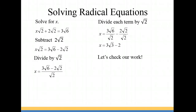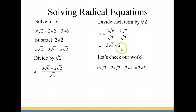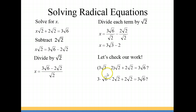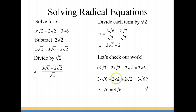Now we're going to check our work. Where we have x in our original equation we're going to replace it with (3√3 minus 2). I put that in parentheses because it's a binomial, and I'm going to distribute the √2. So I have 3√3 times √2 which gives us 3√6, then negative 2√2 and a positive 2√2 — the last two terms cancel each other. So we're left with 3√6 and it checks out.